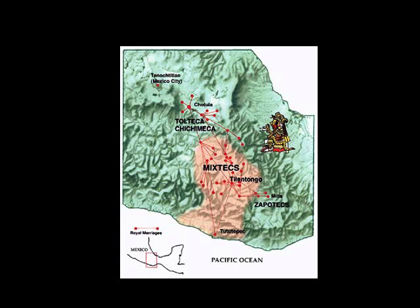The Mixtecs had definite and close connections with the Tolteca-Chichimeca just to the north. The Tolteca-Chichimeca did not speak Mixtec — they spoke a Nahuatl language. And yet the Mixtecs were intimately tied with them politically and in terms of trade, as well as with the Zapotecs to the east. Again, Zapotec is a language very different from Mixtec and not something easily translated across a written system that is really phonetic.